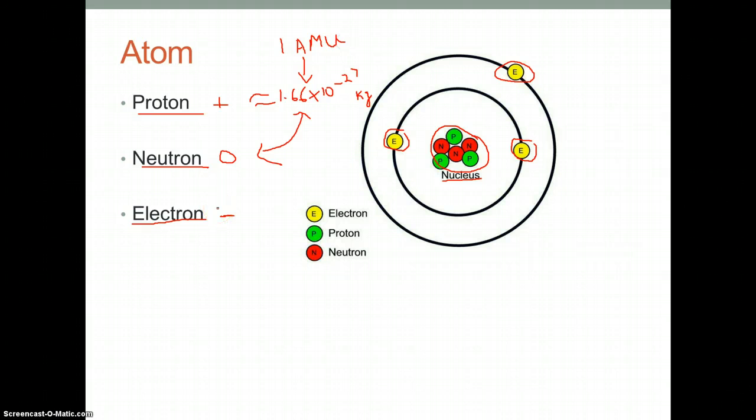The electron is extremely small compared to the proton. The electron is like a little baby in front of the giant proton, and it weighs approximately 9.109 times 10 to the negative 31 kilograms. That is the weight of an electron. So that is basically describing the atom.